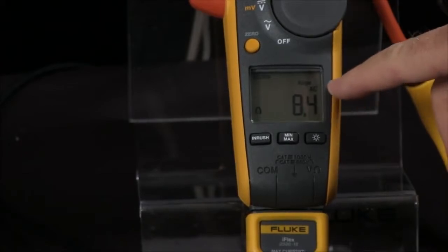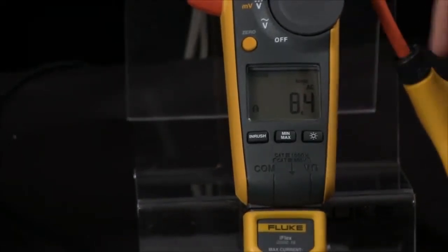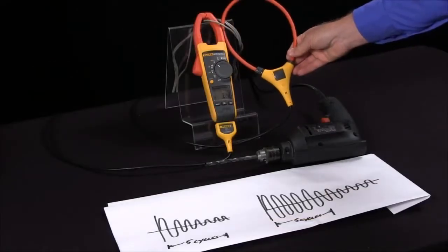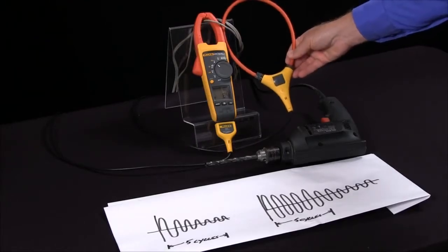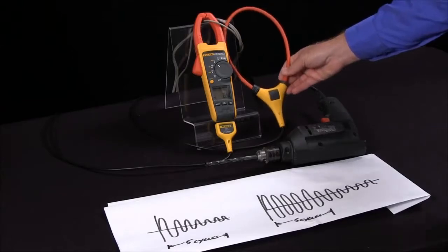This also works with the Fluke iFlex, which is a very handy adapter to get you into tight spaces. If you have cables that are tie-wrapped together, you don't have to cut the cables.